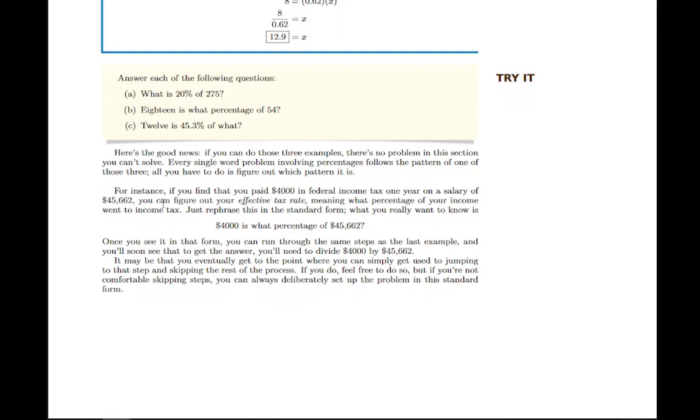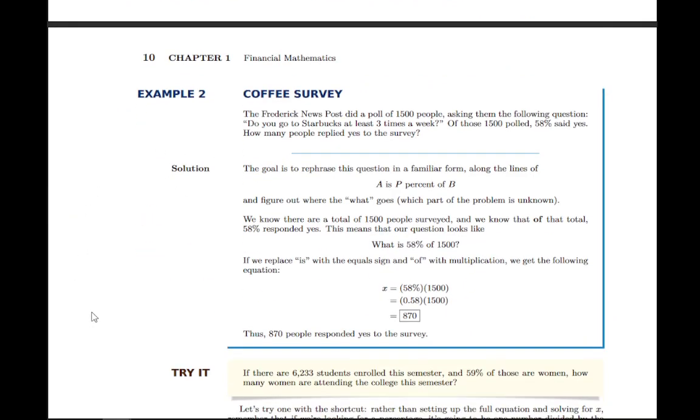For instance, if you paid $4,000 in income tax on a salary of $45,662, you could figure out what percentage your tax rate is. Essentially, you'd be asking $4,000 is what percent of $45,662, which is just like part B of those examples. So you can see that same kind of structure, and it's cloaked within a word problem. And your job is just to figure out how to take that word problem and rephrase it as one of those applied percentage problems. So there's a variety of application problems here.